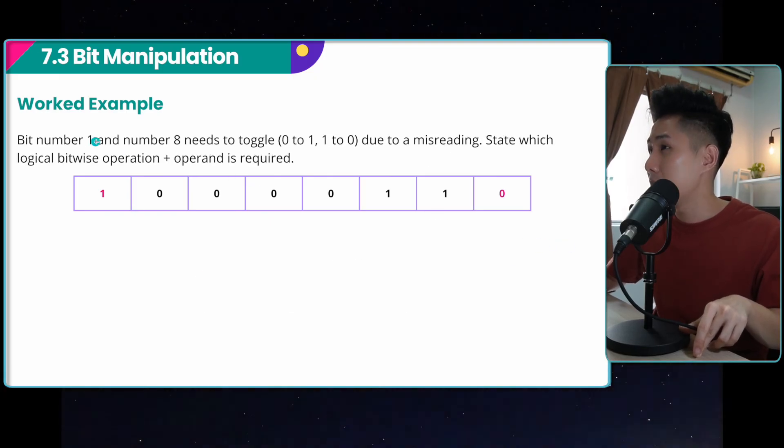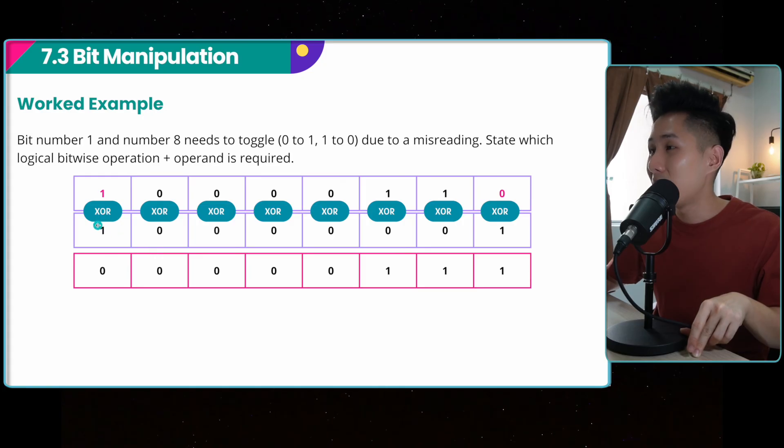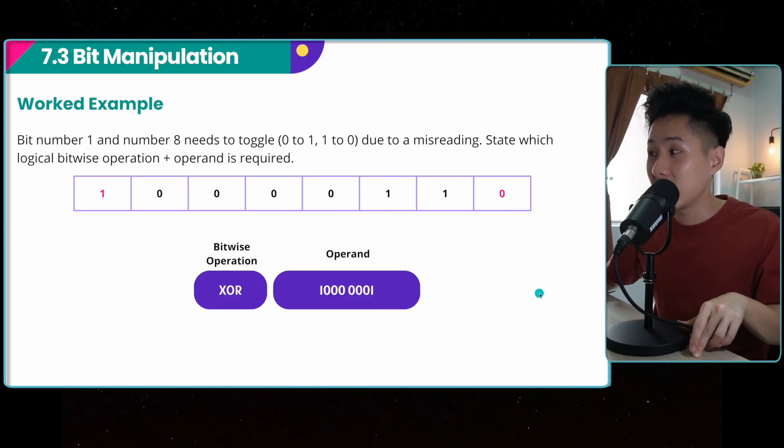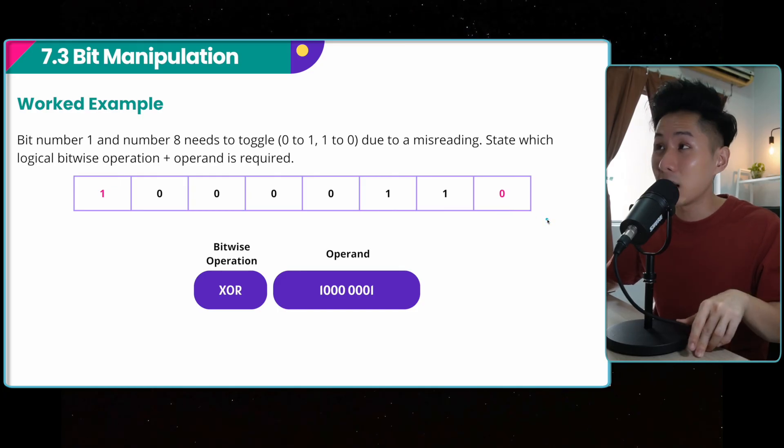Last example, bit one and bit number eight need to toggle due to a misreading. State which logical bitwise operation plus operand is needed. To toggle a bit, we use the XOR operator and then put the operand as one at the location which we want to toggle. So after this operation, you should see that one here has become zero and zero here has become one. But for the other bits, it just remains unchanged. So the bitwise operation is the XOR gate and the operand is one at the locations which I want to toggle. So that's just some examples to help you understand.